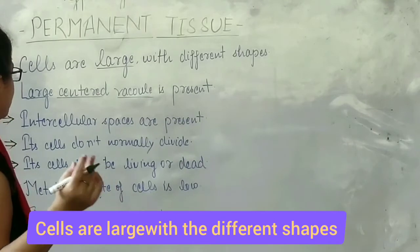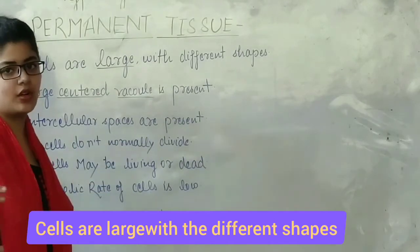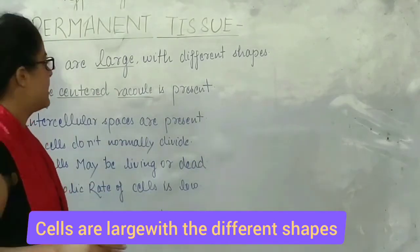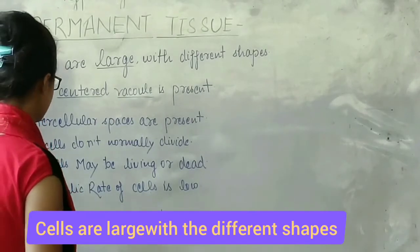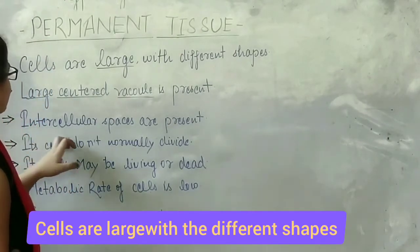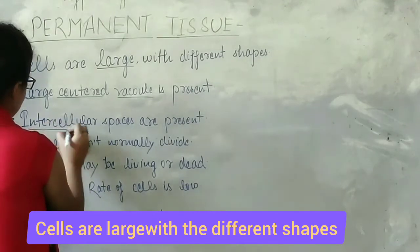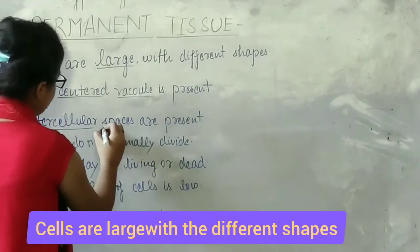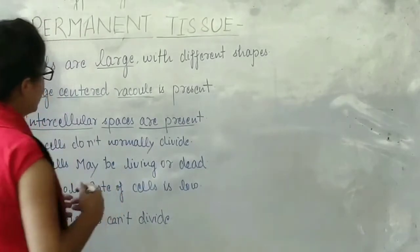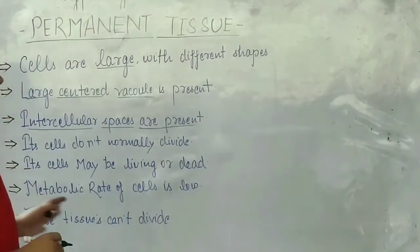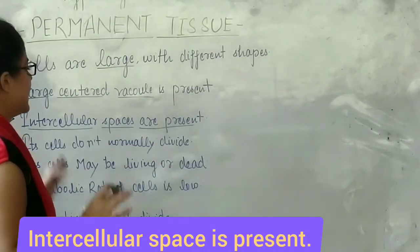In our previous chapter, we learned that the vacuole occupies 90% of the space of plant cells. Intercellular spaces are present in permanent tissue, allowing materials to be transferred between cells.